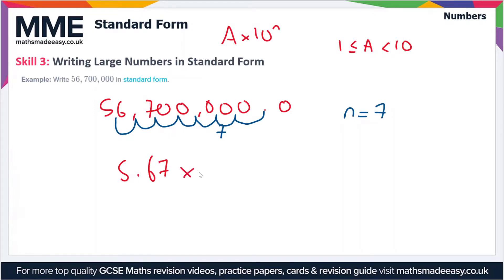So we're left with 5.67 times 10 to the 7, which is equal to 56,700,000.